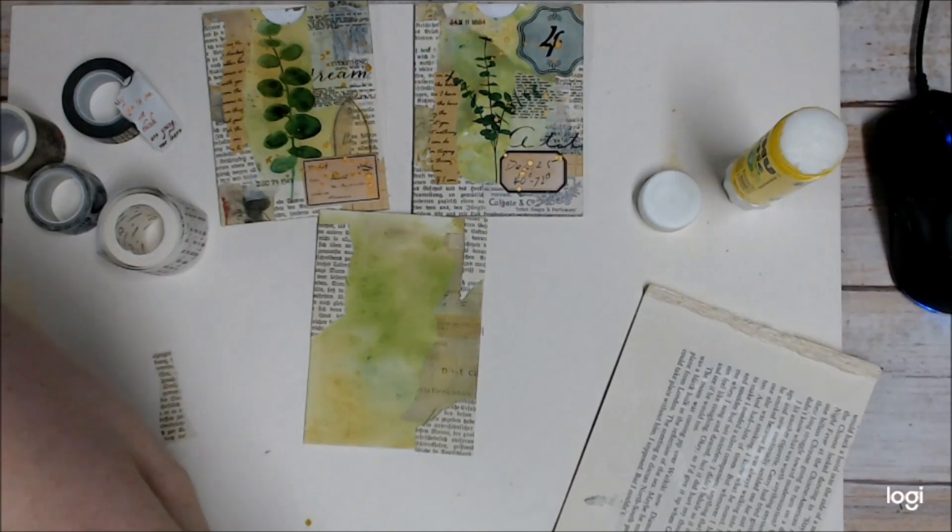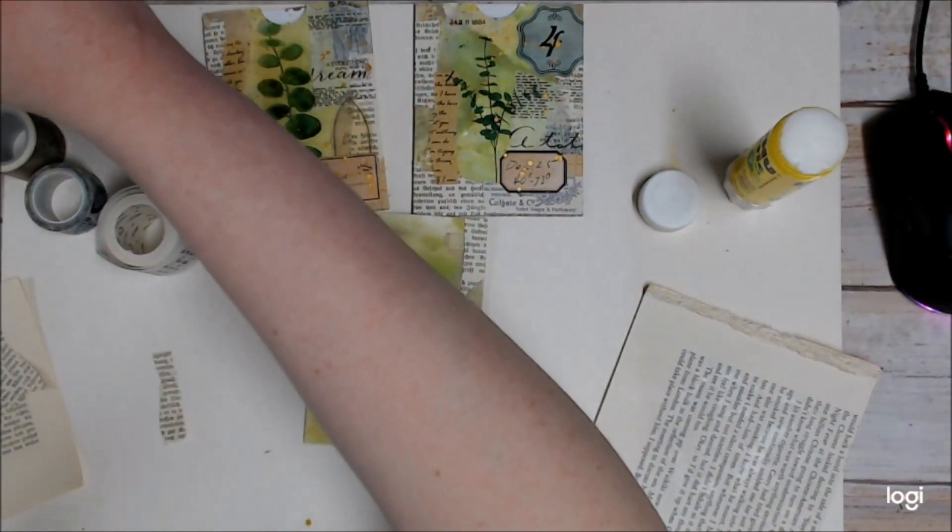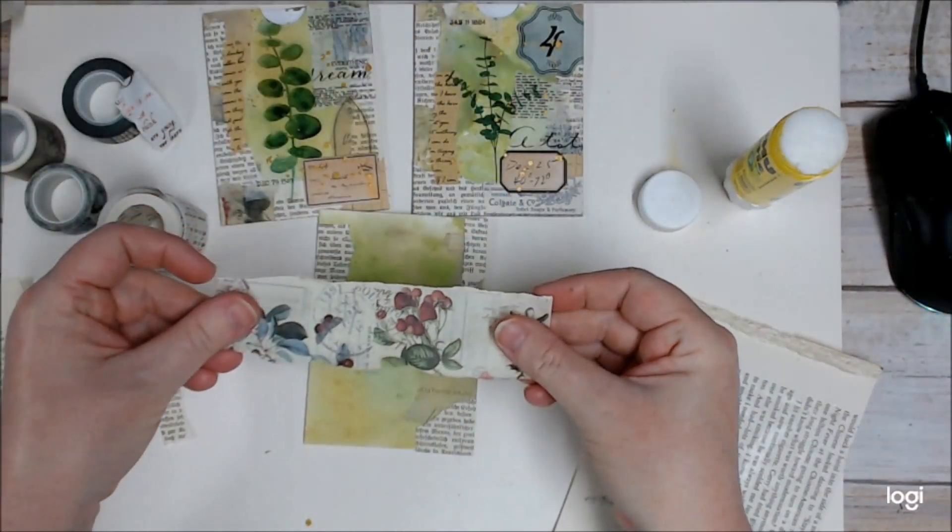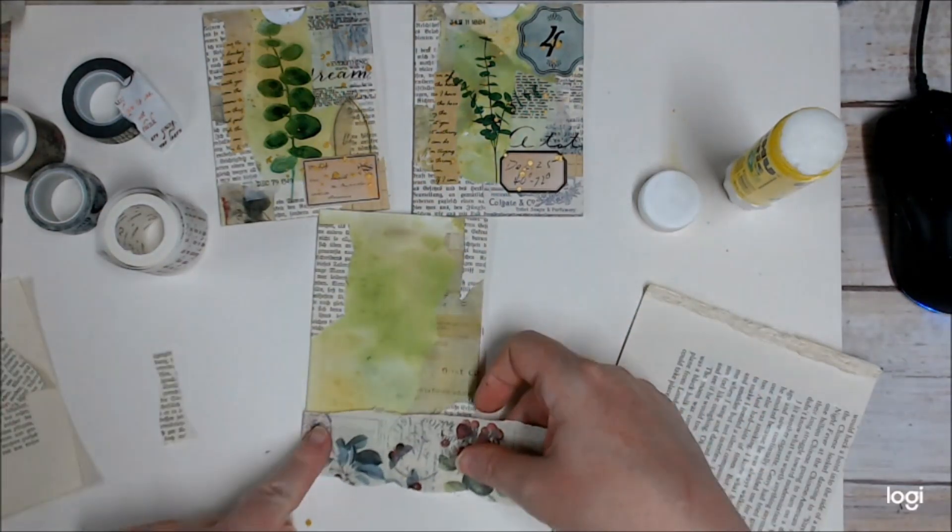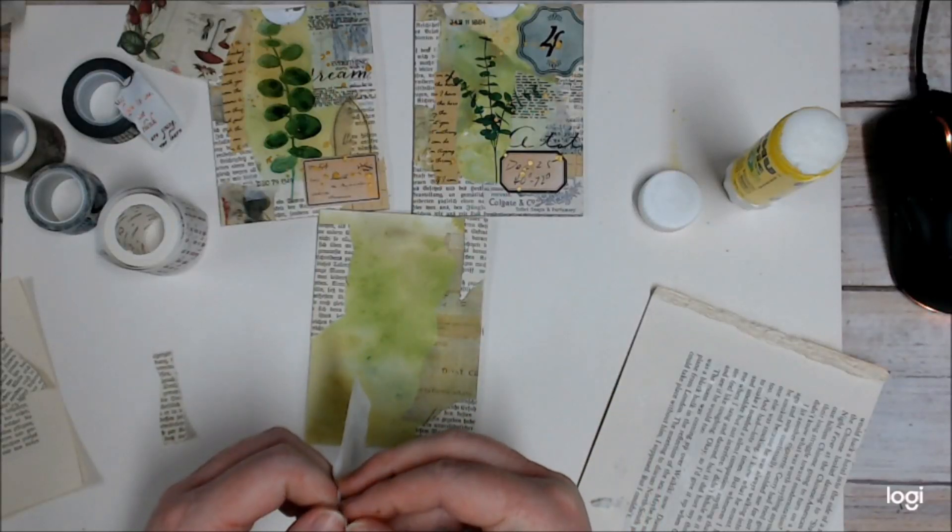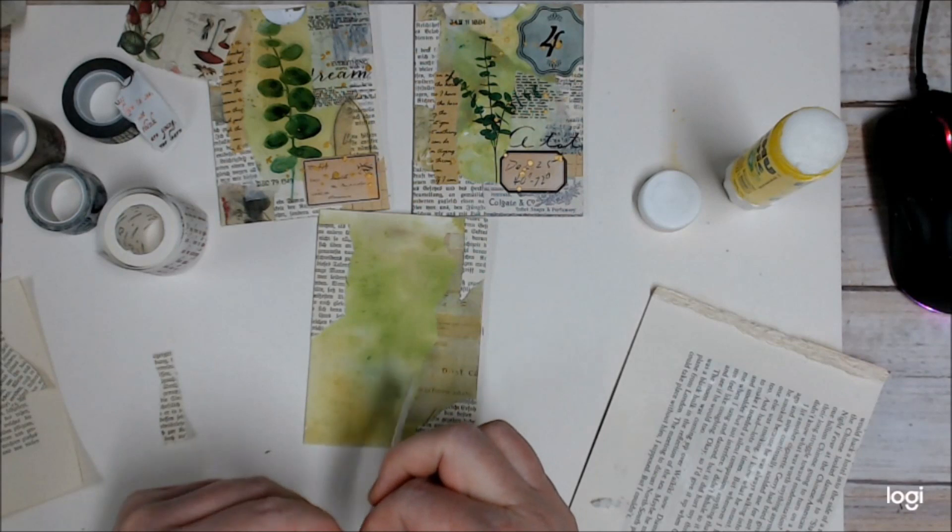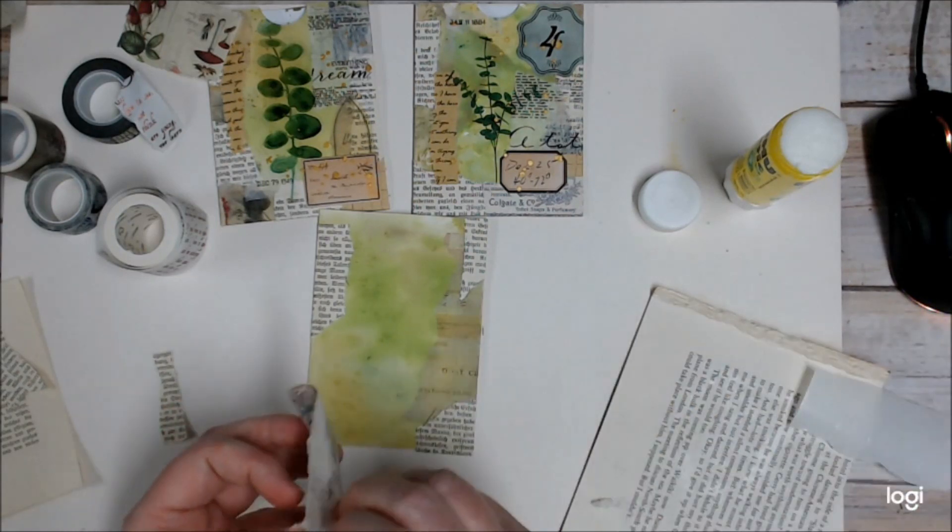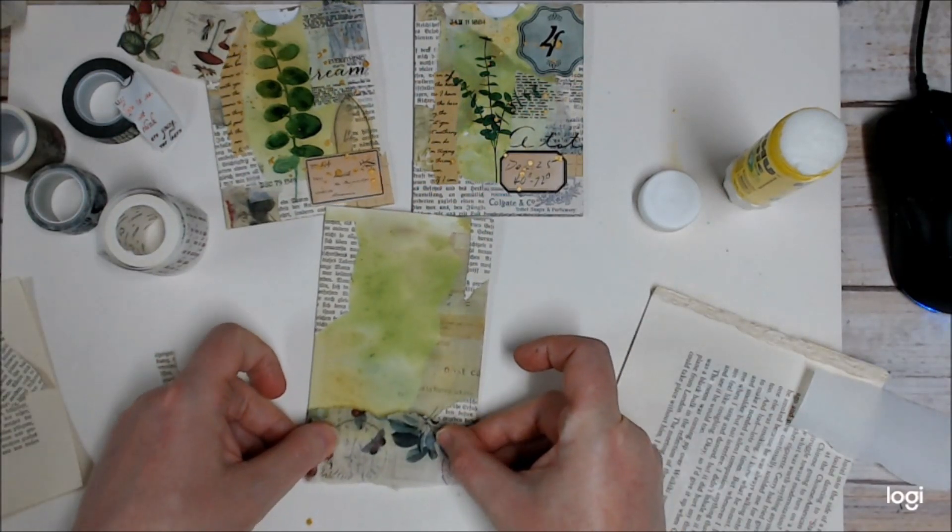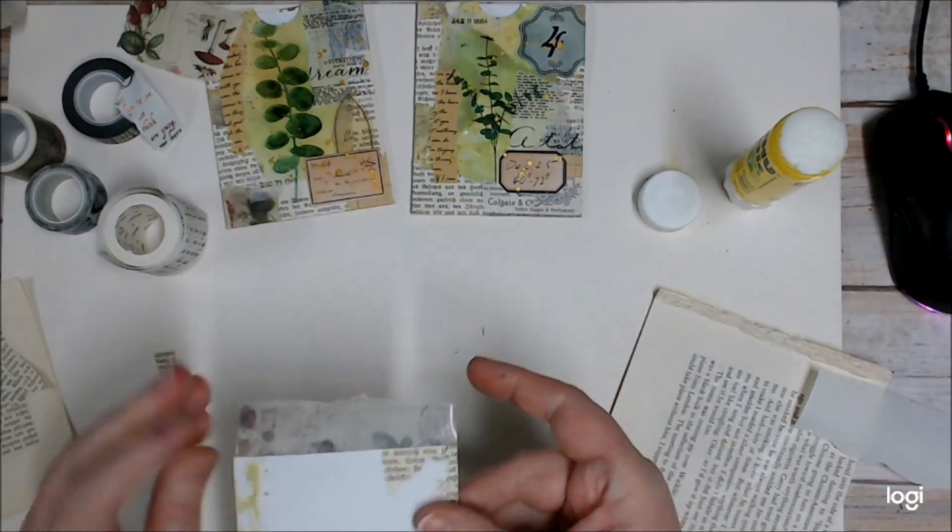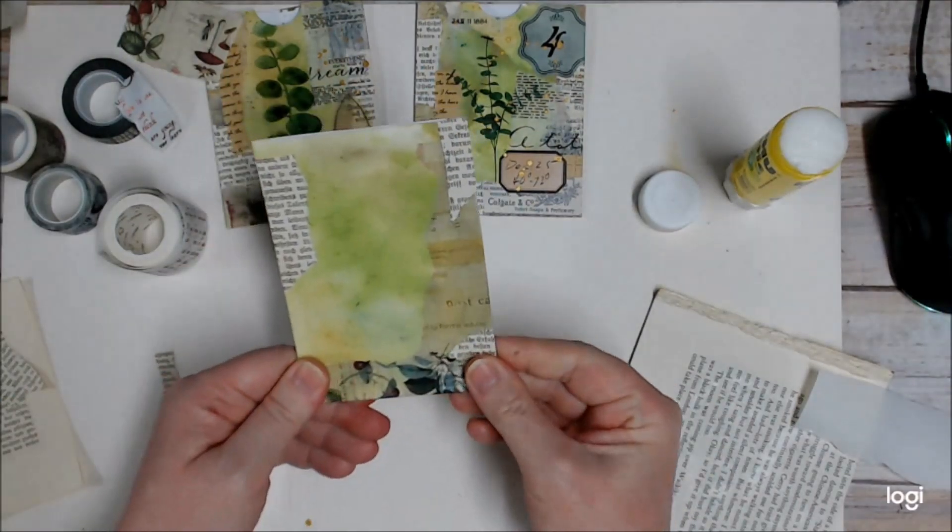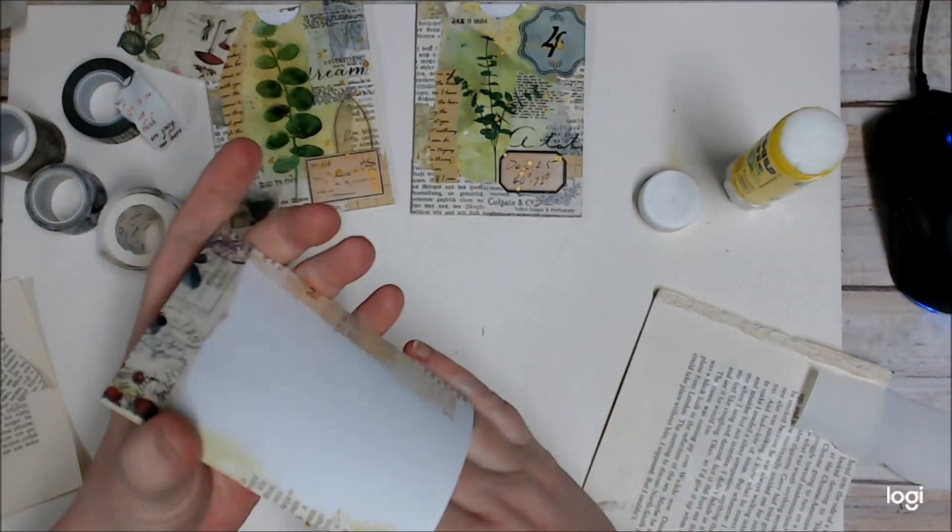I've got this ridiculously huge washi tape here. So I'm just going to tear a piece off. And I like this one because it's actually got a backing, so it's a bit like a huge sticker sheet. I'll just stick that across the bottom and then fold the rest up behind. So now my pocket is fully sealed on all sides.